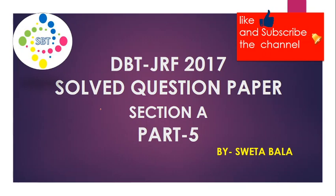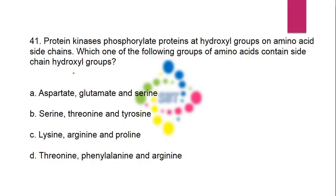The first question: protein kinase phosphorylates protein at hydroxyl group on amino acid side chains. Which one of the following groups of amino acids contains side chain hydroxyl group? The first option is aspartate, glutamate, and serine. Aspartate and glutamate are negatively charged or acidic amino acids, so they contain a carboxyl group as a side chain — this is not the correct option.